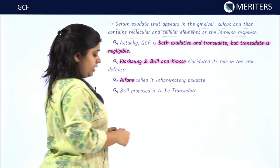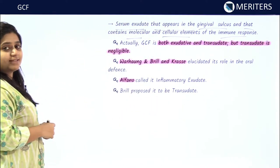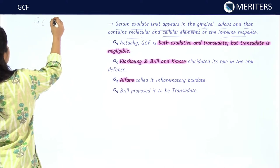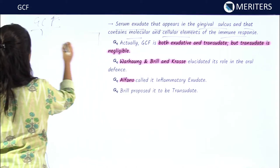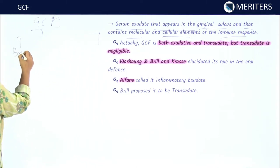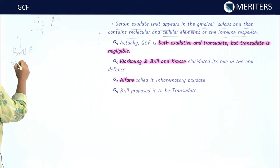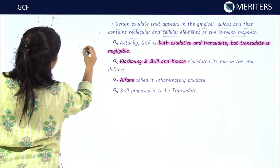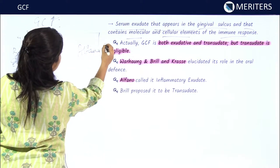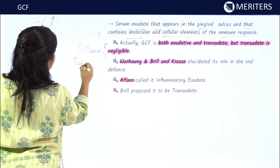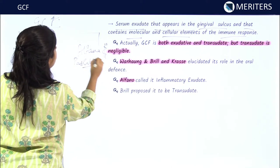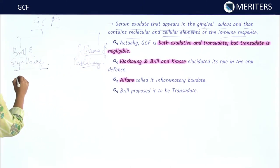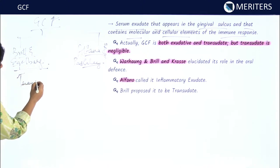GCF formation is based upon two theories. The first was proposed by Brill and Eagleburg and the other proposed by Alfano and Paschle. According to Brill and Eagleburg, GCF is a transudate.